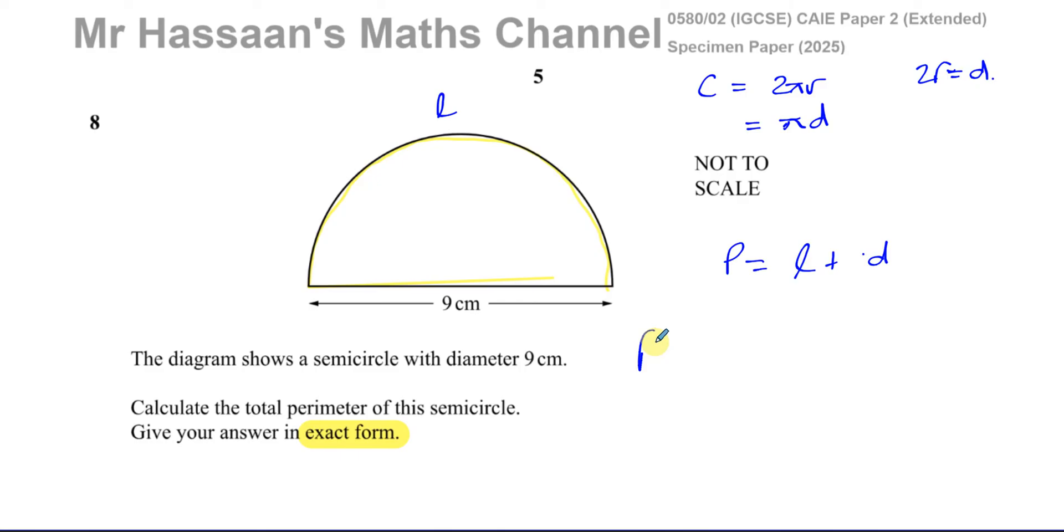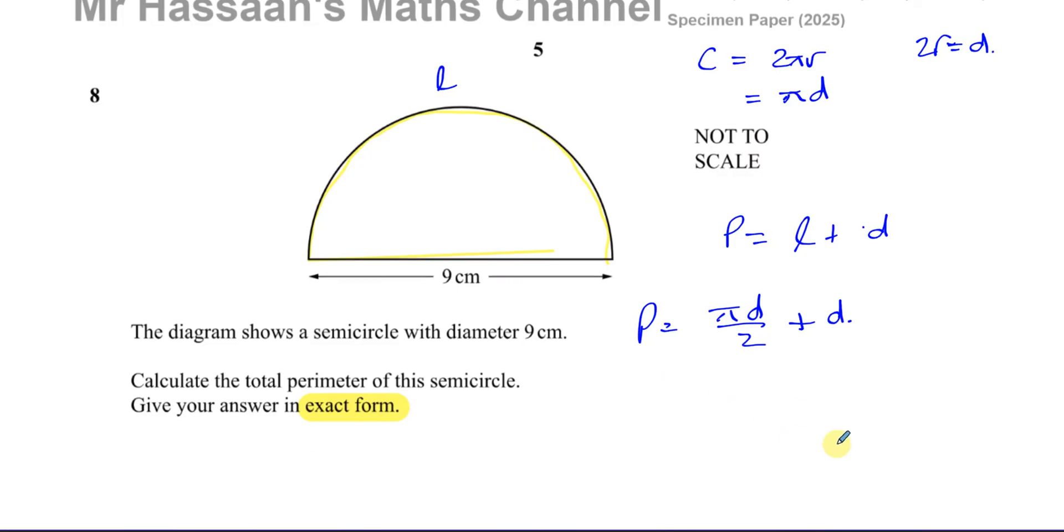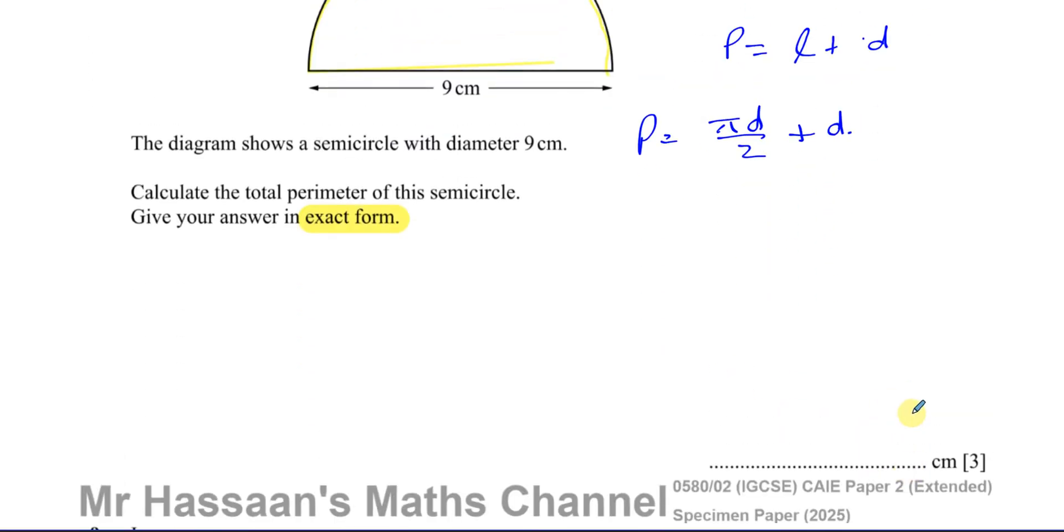Now, because we have half a circle, then the perimeter would be given by πd divided by 2, and then you have to add the diameter. That's πd divided by 2, plus the diameter, and that will give us the perimeter of this semicircle.